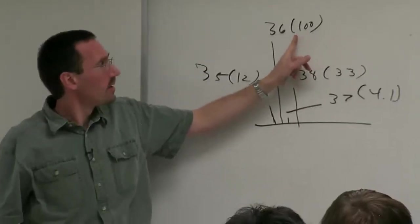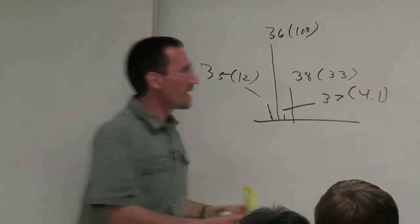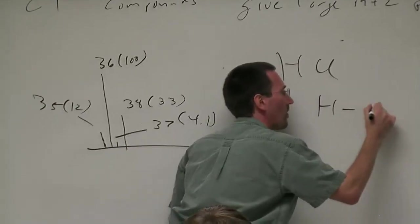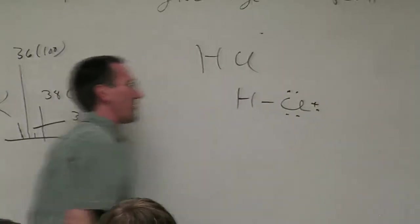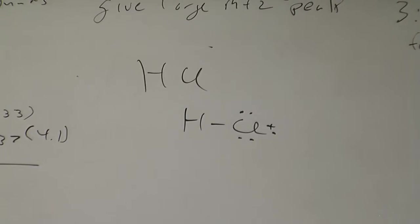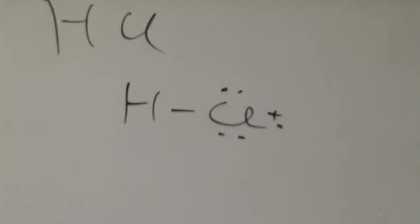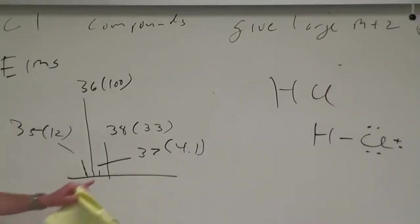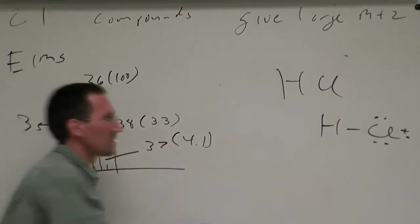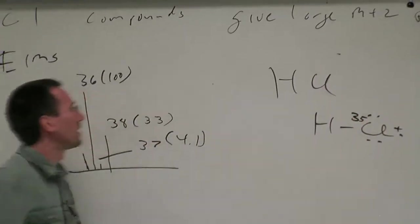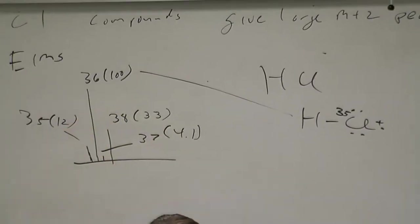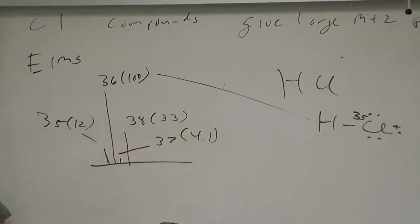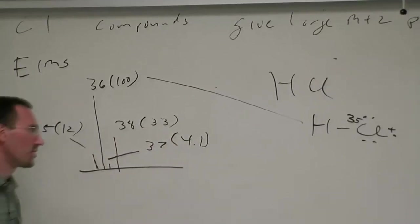Let's start with the big guy here. What's the big guy? HCl with chlorine 35. If you remember, in EI mass spec the way you generate a molecular ion is to kick out an electron. What about this peak here at 38? That's the chlorine 37 one. So far so easy.